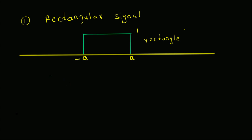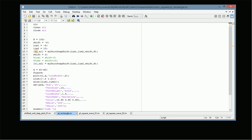We denote it as x1(t), which is by definition u(t+a) minus u(t-a). That is, it is the difference of two unit step signals — one starting at minus a and the other starting at plus a — so we get the rectangular signal form. Now let us look at the MATLAB code for this.